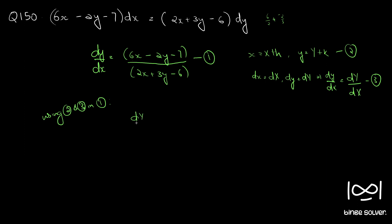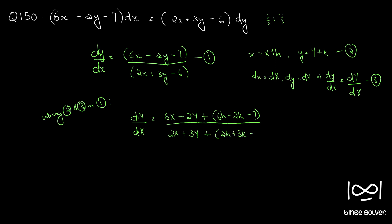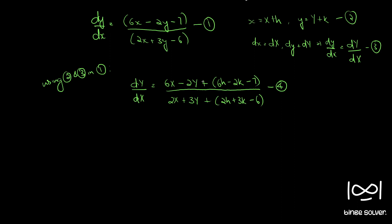We have d capital Y by d capital X equal to 6X minus 2Y plus 6h minus 2k minus 7, over 2X plus 3Y plus 2h plus 3k minus 6. Call this equation 4. Equation 4 reduces to a homogeneous form if we find h and k such that 6h minus 2k minus 7 equal to 0 and 2h plus 3k minus 6 equal to 0.